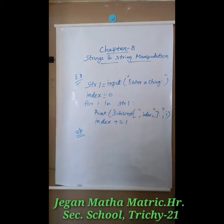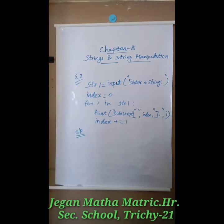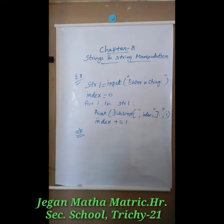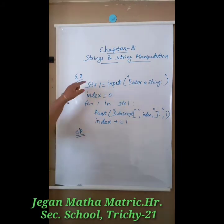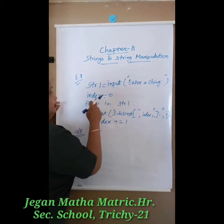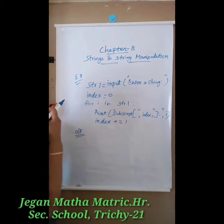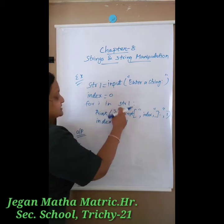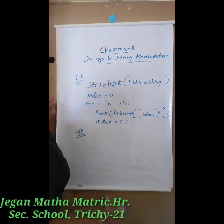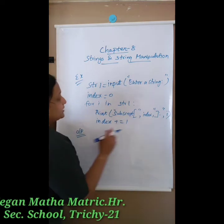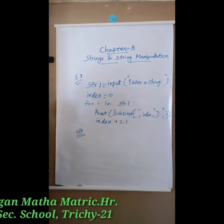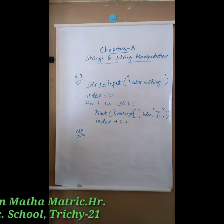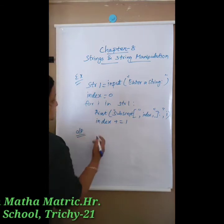Now let us see an example program to access each character with its positive subscript for a given string. The code: string1 = input('Enter a string'); index = 0; for i in string1: print('subscript[', index, ']:', i); index += 1. Here index += 1 means index is equal to index plus 1.